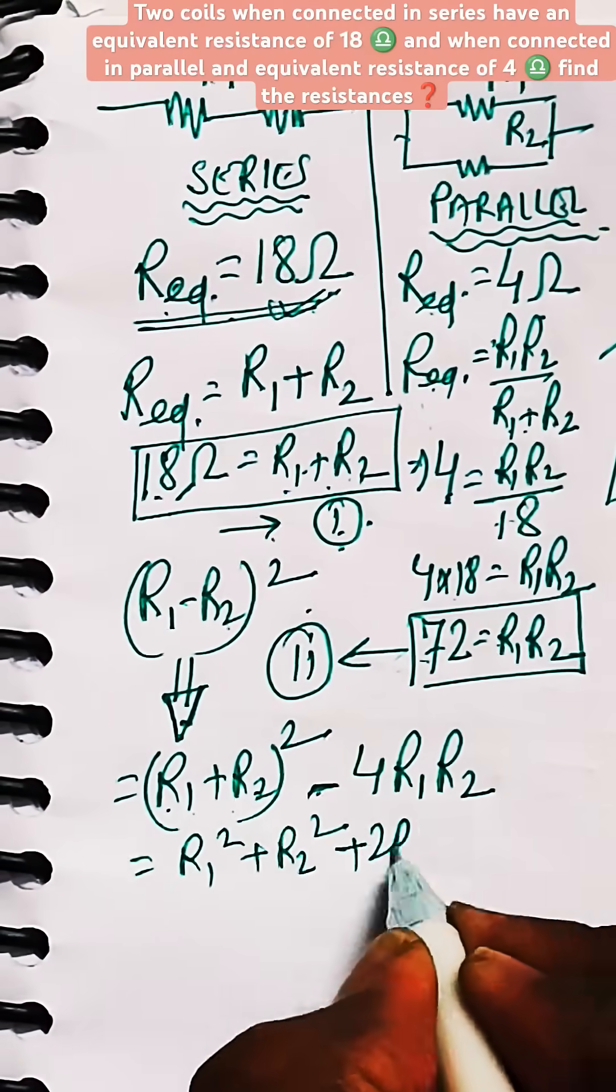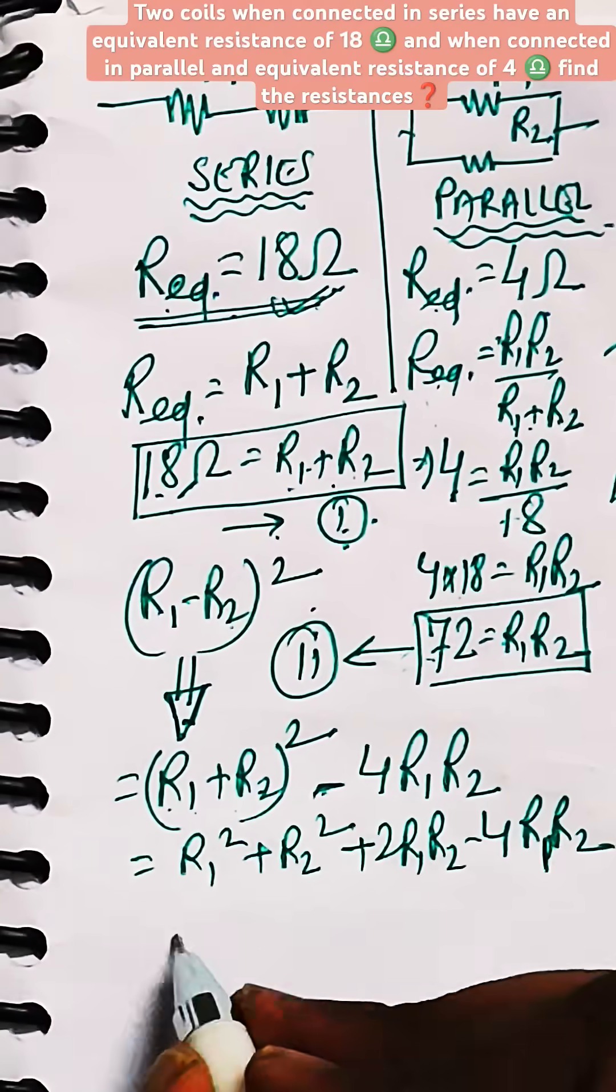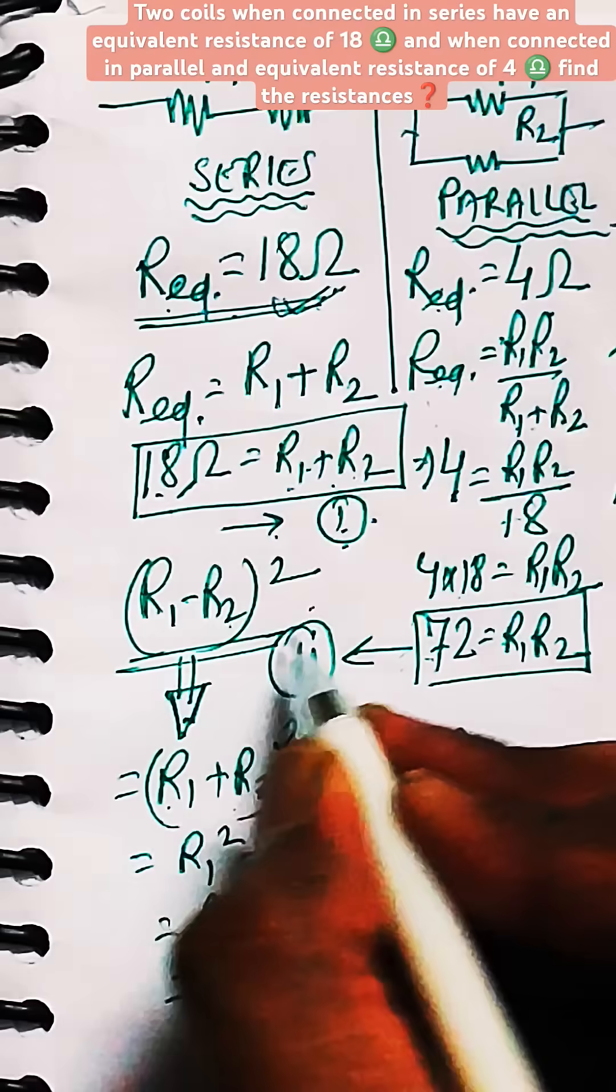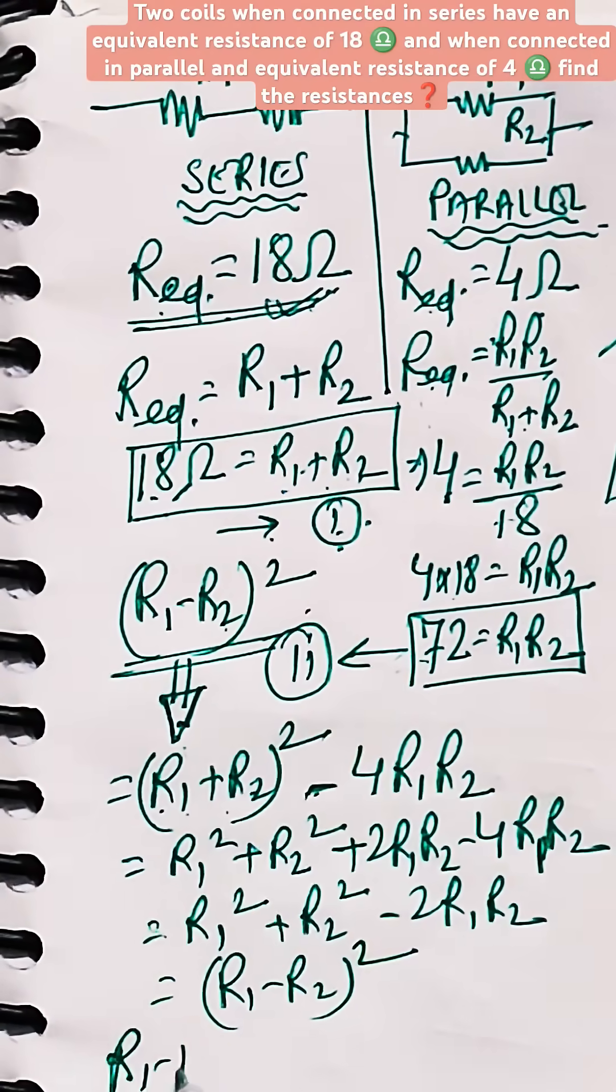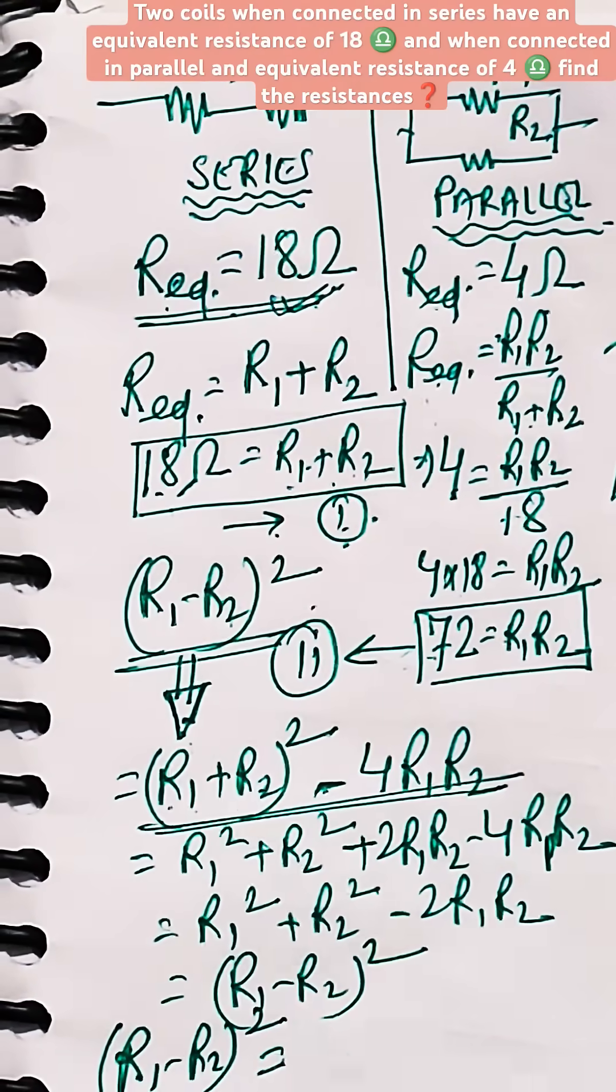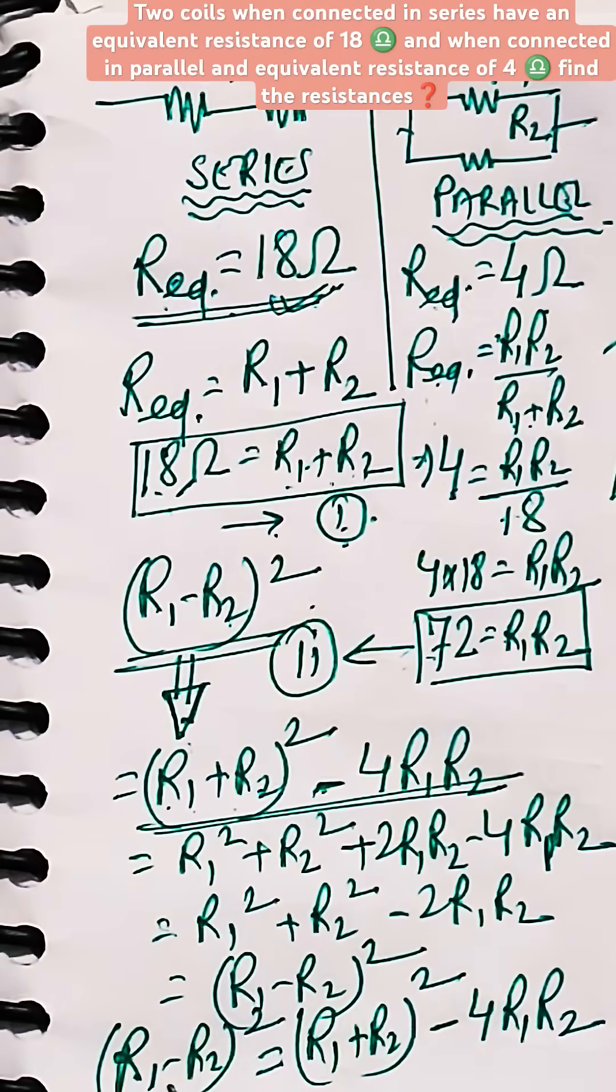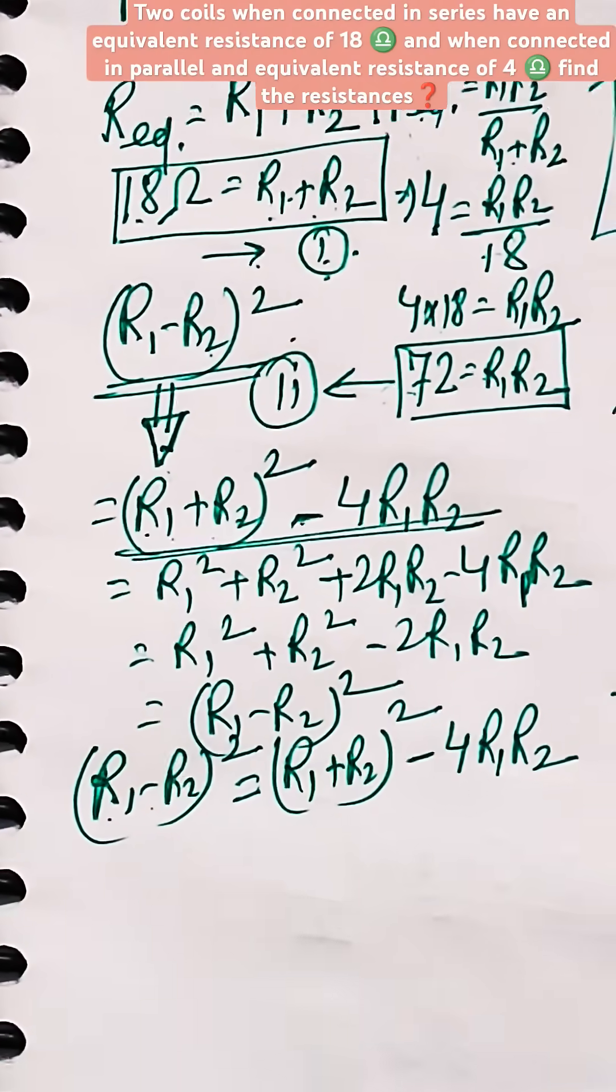Let me explain. Just expand the RHS. It will be coming as you can see: R1 square plus R2 square minus 2 R1 R2, which is equal to R1 minus R2 whole square. So in this way we can write R1 minus R2 whole square as R1 plus R2 whole square minus 4 times R1 R2.